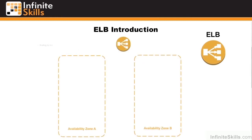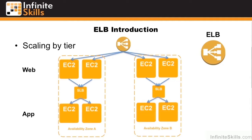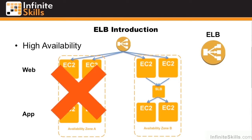Let's look at scaling by tier. Here we have an elastic load balancer with two availability zones behind it. We have a web tier being balanced to a software load balancer, and then an application tier behind that. We could scale our web tier independently of our app tier. It also allows for high availability — if we lose one EC2 instance, we still have three running, and in fact we can lose an entire availability zone and still have our application running in the other.